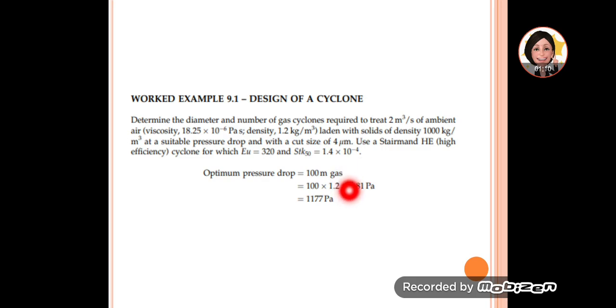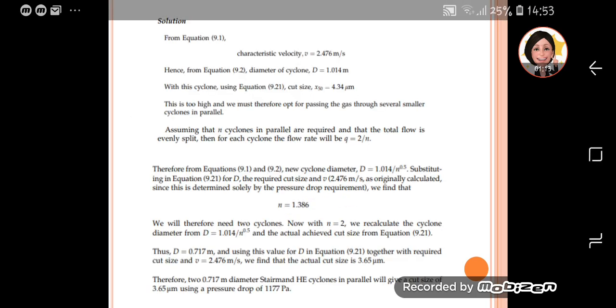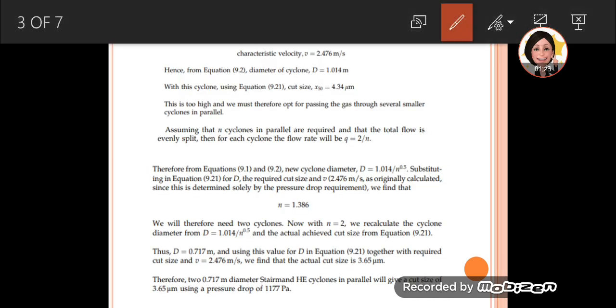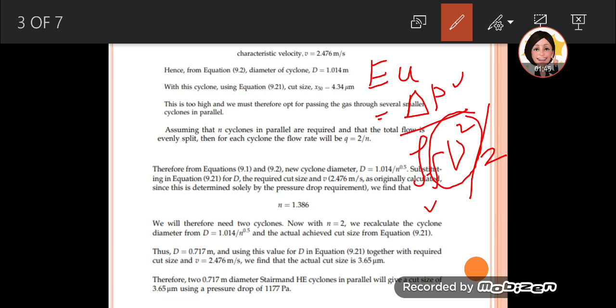So we get the total pressure drop. The first thing we can calculate is the characteristic velocity using the Euler equation from equation 9.1. Euler equals total pressure drop over density V squared over 2. Since we have the total pressure drop and the density of the fluid, we can find V.